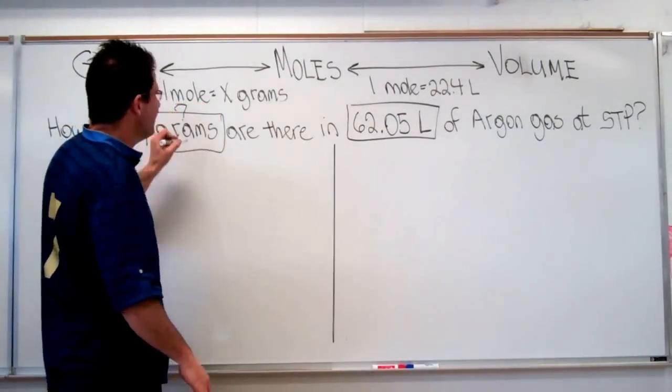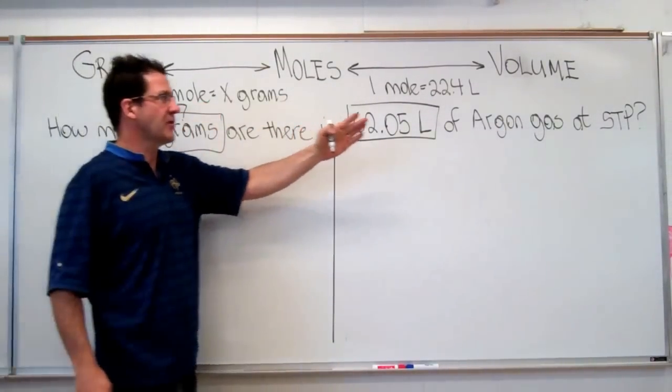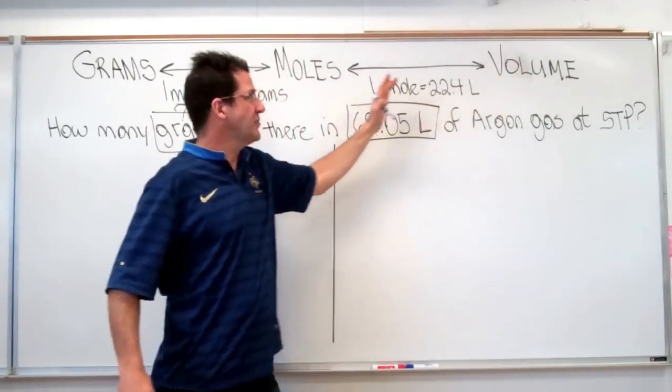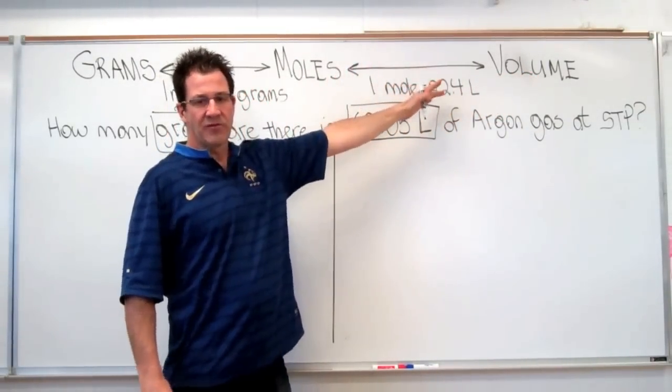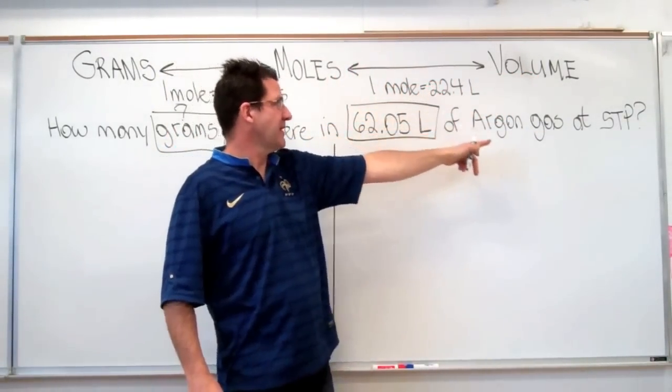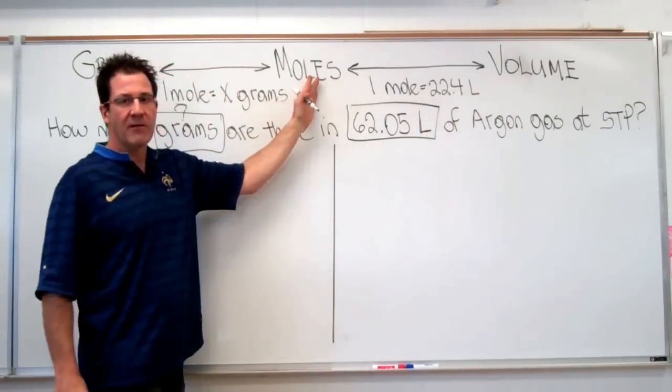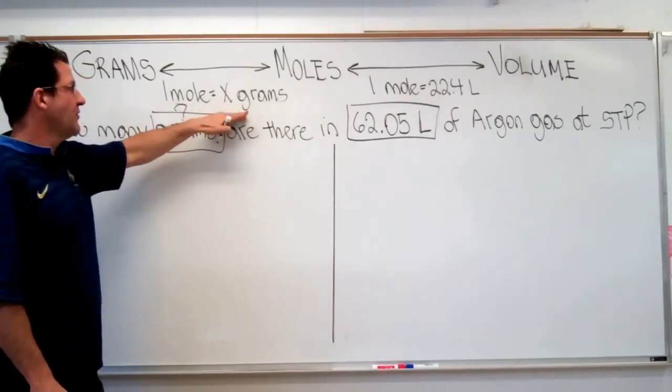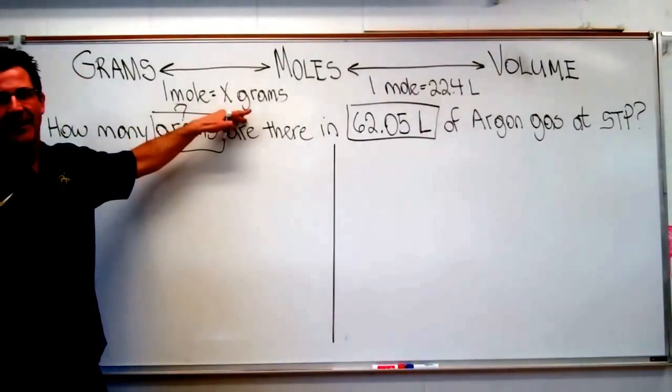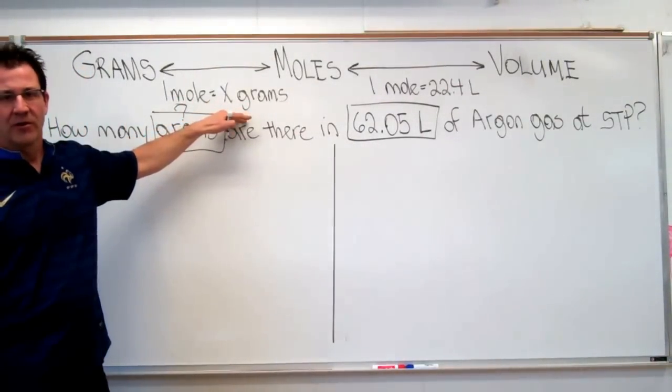This is what we're trying to find. So we're going to end up here in grams, which means we're going to go from volume to moles in the first step using our molar volume. One mole of gas at standard temperature and pressure is 22.4 liters. Then we're going to go from moles to grams using the molar mass because we know that the molar mass of argon gas is 39.94 grams.